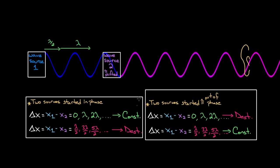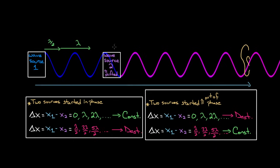Recapping: constructive interference happens when two waves are lined up perfectly; destructive interference happens when peaks match valleys and they cancel. You can use the path length difference for two wave sources to determine whether waves interfere constructively or destructively. Assuming sources started in phase with no pi shifts, integer wavelength path length differences give constructive and half-integer give destructive. If sources started pi out of phase, or one got a pi phase shift along its travel, integer wavelengths give destructive and half-integer wavelengths give constructive.